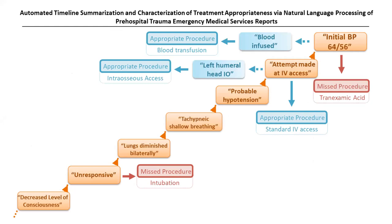We were able to take those notes and summarize them into extracted concepts. The patient came in with decreased level of consciousness, then became unresponsive — if someone's unresponsive, they're supposed to get intubated. So right here you can see an error of omission for this real patient. Their lungs had diminished breath sounds bilaterally, shallow breathing, probable hypotension, and attempted IV access. Patients with low blood pressure got blood — that was appropriate — but they didn't get TXA. In this one example, there are two errors of omission.